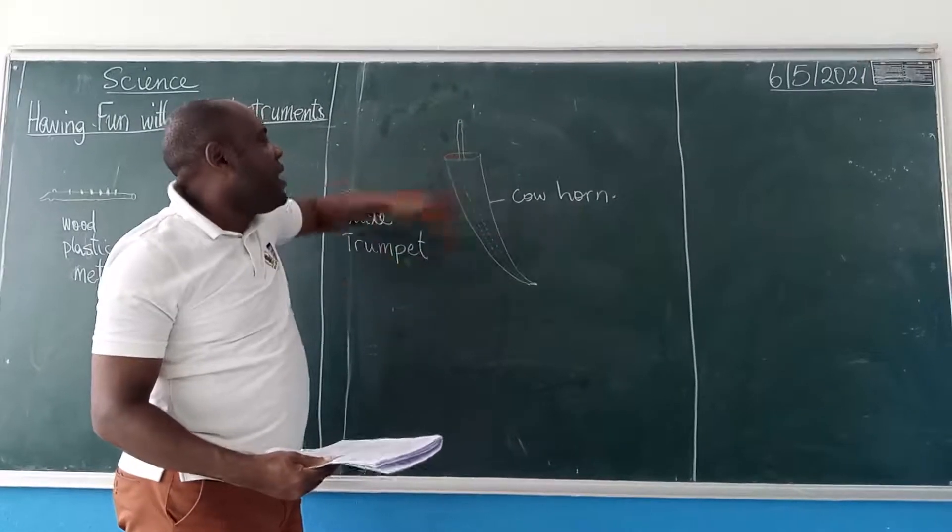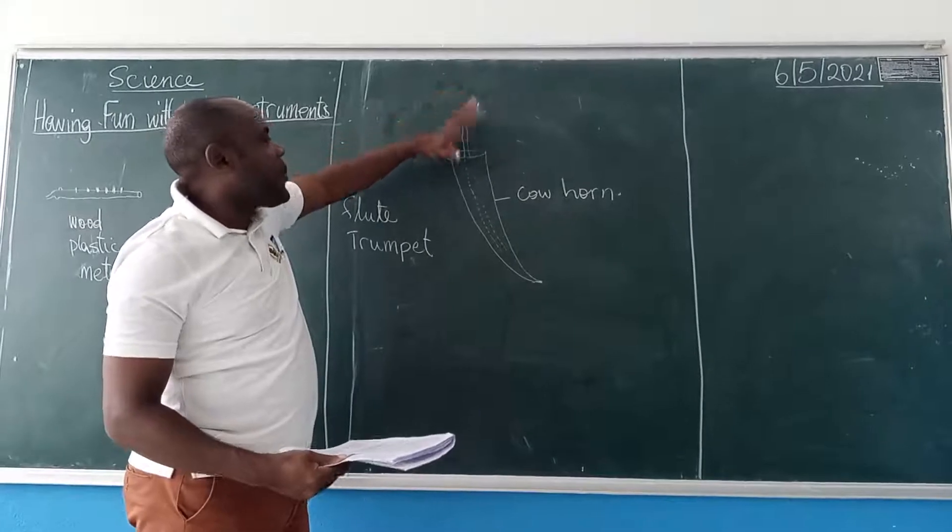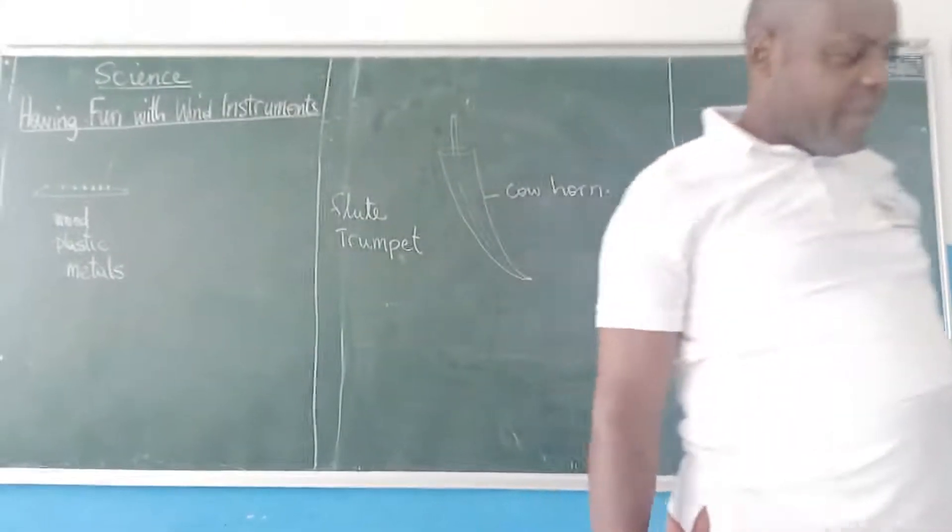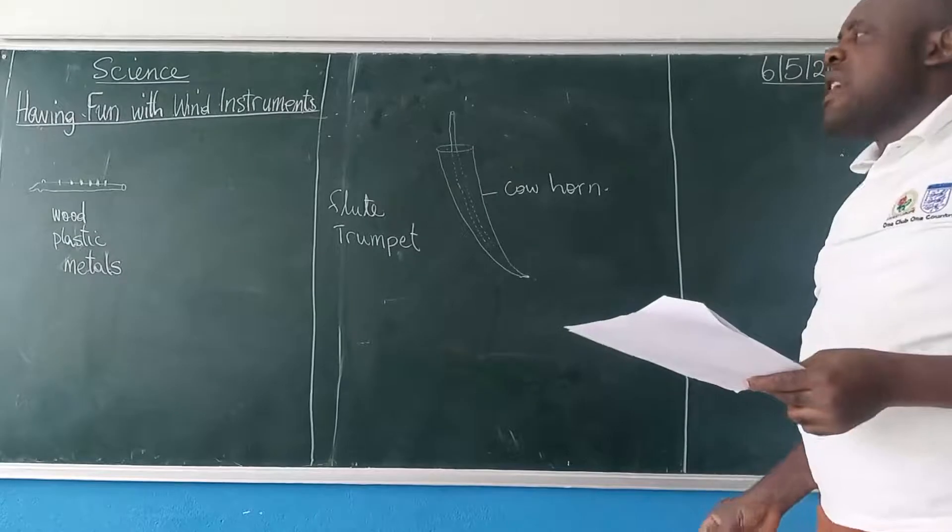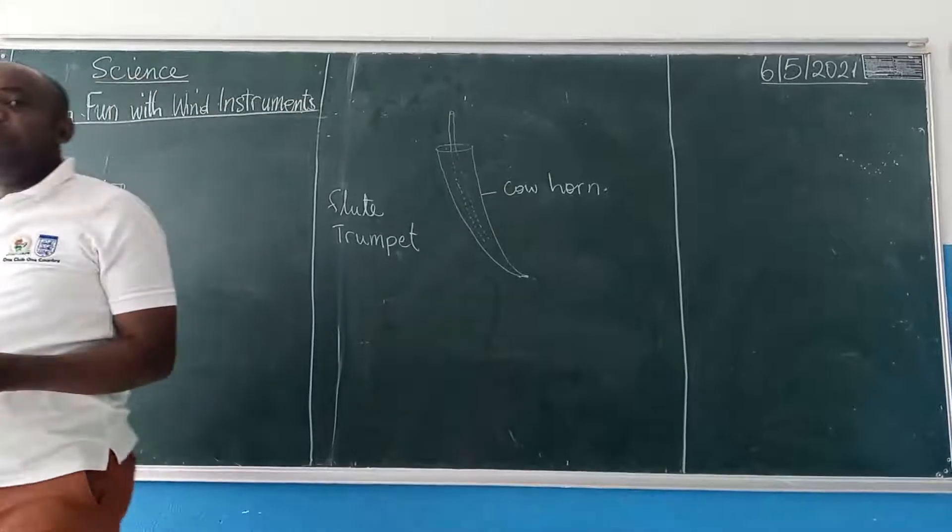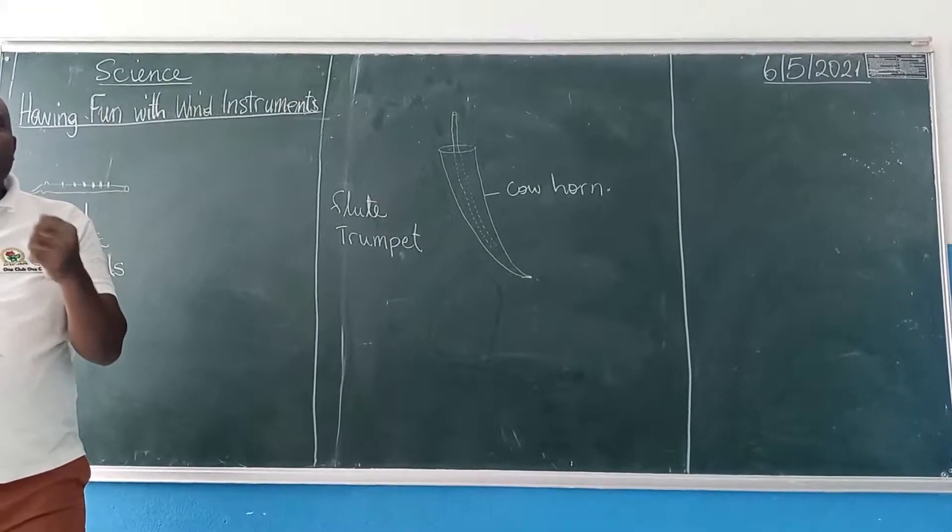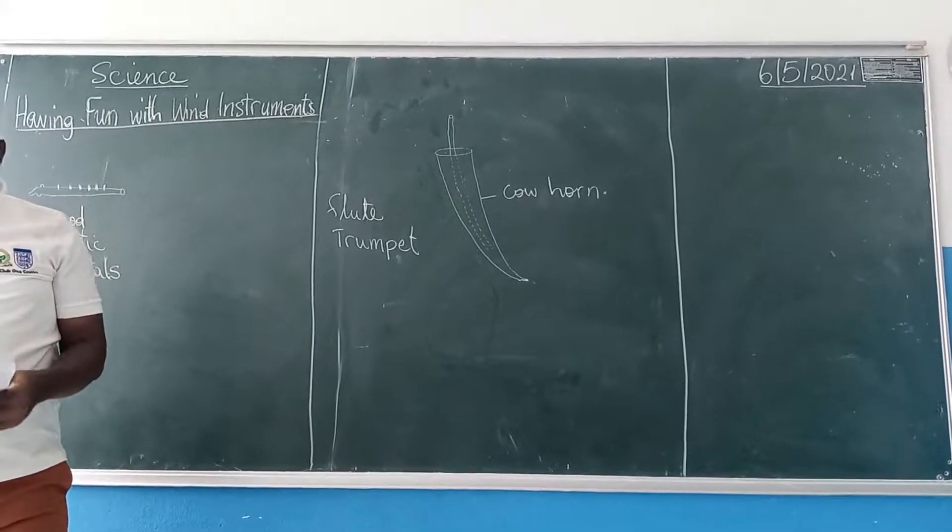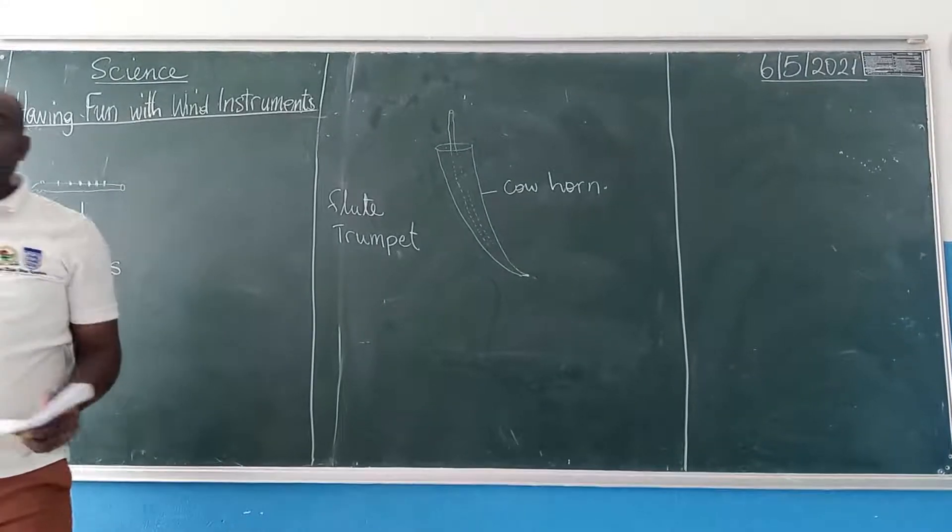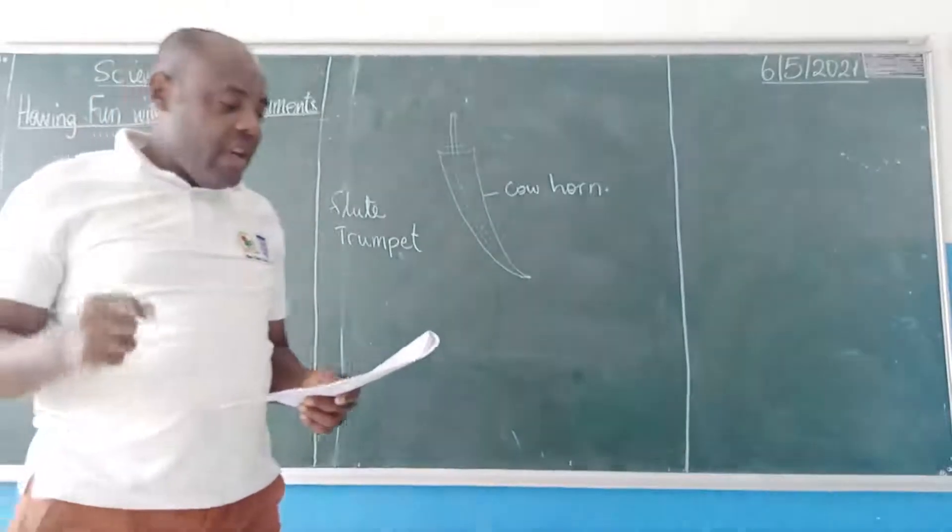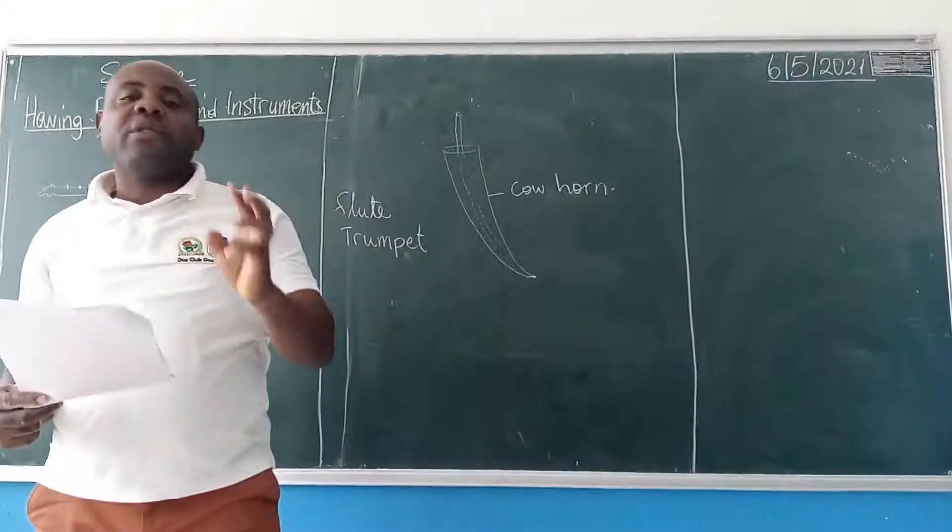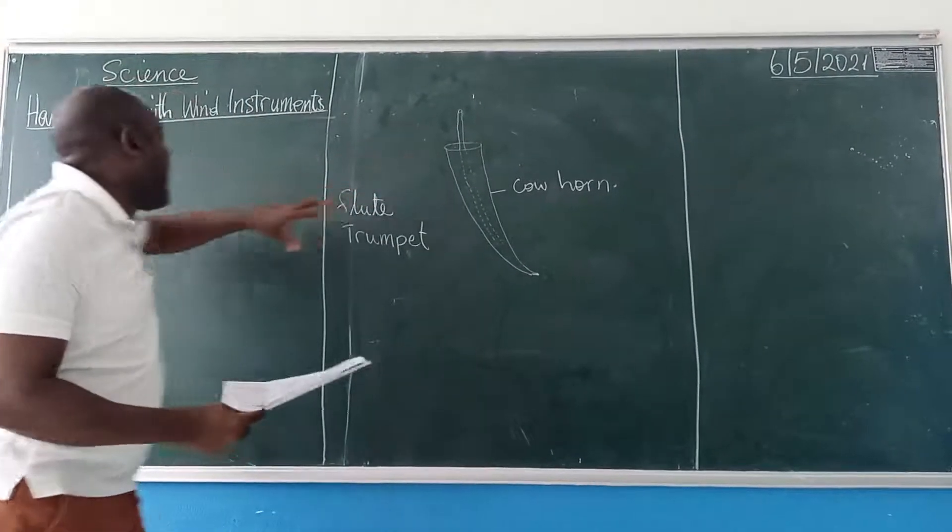When they kill a cow, they cut the horn and then they remove the matter which is inside, and they use it to make this instrument. So the instrument, or the sound produced by the instrument, they are analyzed based on the pressure of the air that goes inside the instrument. If I blow air that has too much pressure inside, what happens is the too much pressure that I mount inside the air will control the sound.